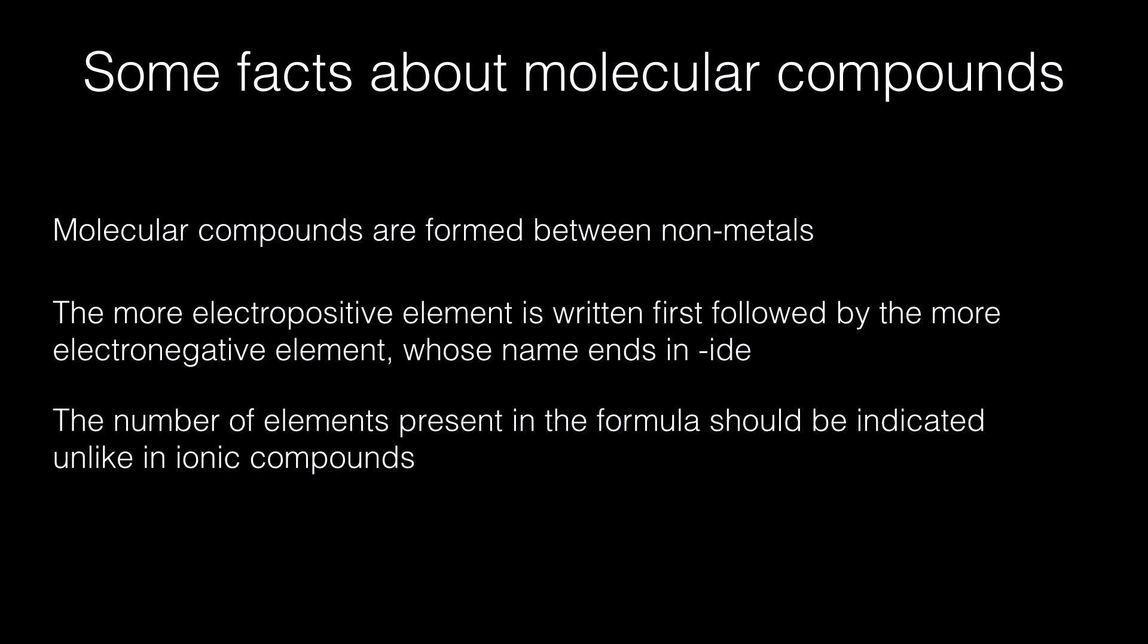The number of elements present in the formula of a molecular compound should be indicated. In an ionic compound we do not say the number of atoms that are present, and that is a marked difference between naming of ionic compounds and molecular compounds.